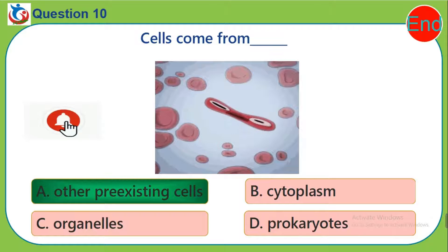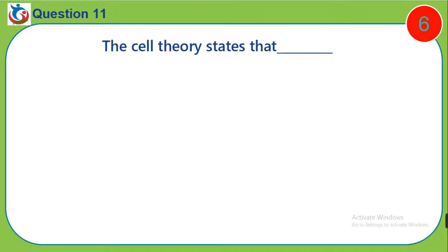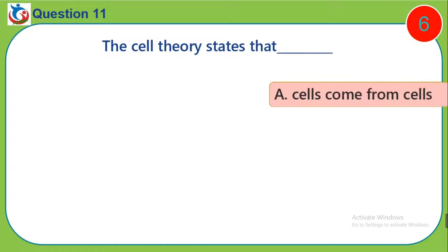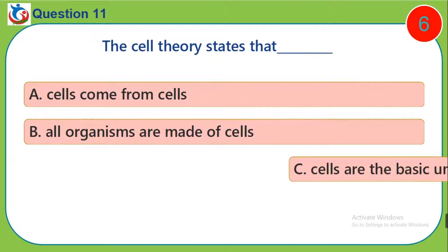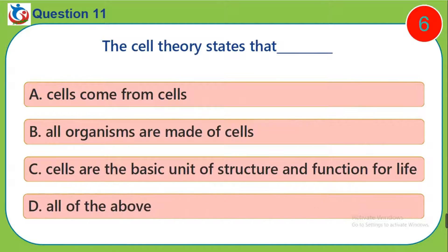Question 11. The cell theory states that: A. Cell comes from cells. B. All organisms are made of cells. C. Cells are the basic unit of structure and function for life. D. All of the above.